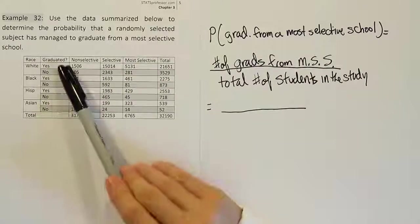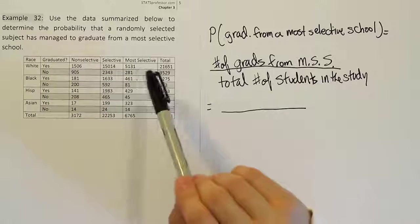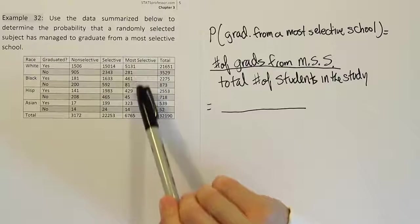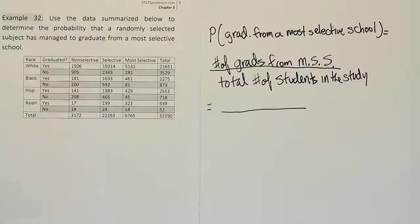Over here there's a column that says graduated and it says yes, no, yes, no, yes, no. The white spaces are the yeses and the shaded spaces are the noes. So only the people who are in the white or the numbers that are in the white spaces represent graduates. So those are the numbers that have to go on top here.